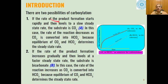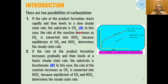There are two possibilities of carboxylation: case A where carbon dioxide is used as substrate, and case B where bicarbonate is used as the substrate. In case A, the rate of product formation starts rapidly and then levels to a slow and steady-state rate when carbon dioxide is used as a substrate. The rate of reaction decreases as carbon dioxide is converted into bicarbonate, because the equilibrium of carbonate and bicarbonate will determine the steady-state in this type of reaction condition.